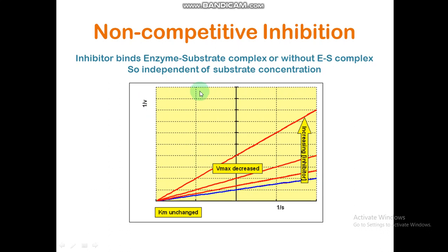Today we are going to discuss how we determine non-competitive inhibition, and if we have a non-competitive inhibition, how we will determine our inhibition constant value, which is the Ki value. During non-competitive inhibition, the inhibitor binds the enzyme-substrate complex or the enzyme alone, independent of the substrate concentration.